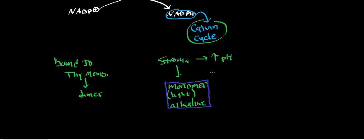However, when the light reactions are not taking place — when it's dark — the pH of the stroma drops, not becoming too terribly acidic. But the cytochrome B6F complex is not very active in the dark. Whenever it starts to shut down, ferredoxin NADP+ oxidoreductase then becomes a dimer and associates with the thylakoid membrane, partly for stabilization of the enzyme.